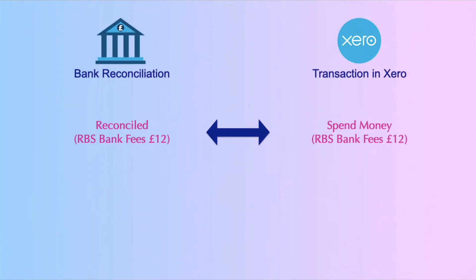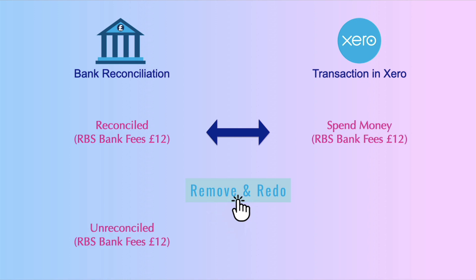Compare that to if instead we choose remove and redo. We start with the same transaction, but when we remove and redo, the bank fees for £12 go back to the bank reconciliation as being unreconciled. But because we chose remove, there is now no transaction in Xero. Hopefully that makes it clear — that's the difference between the two.